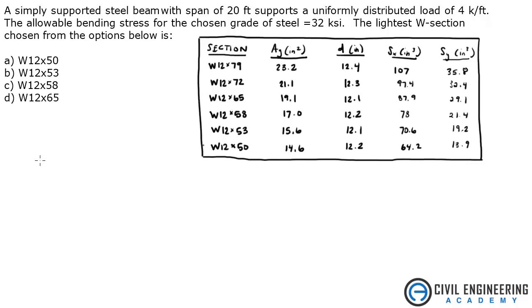A simply supported steel beam with a span of 20 feet supports a uniformly distributed load of 4 kips per foot. The allowable bending stress for the chosen grade of steel is 32 KSI. The lightest W section chosen from the options below is what?